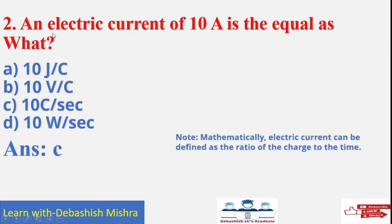Second question. An electric current of 10 ampere is equal as what? Here is also a note. Mathematically, electric current can be defined as the ratio of charge to time. Charge to time. So what will be your answer? Charge to time second C. 10C by second.